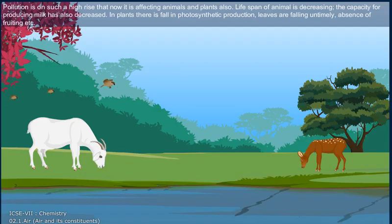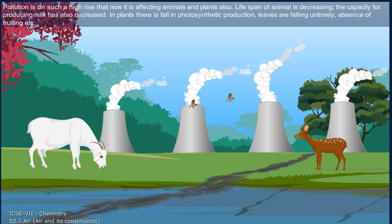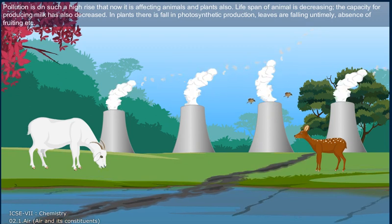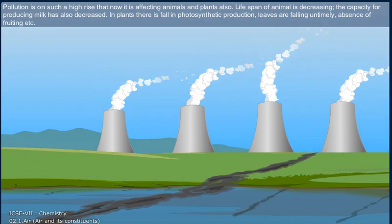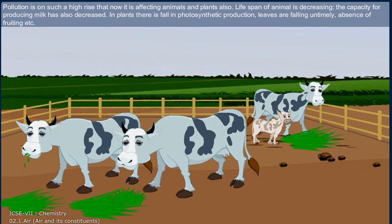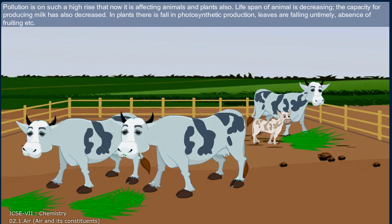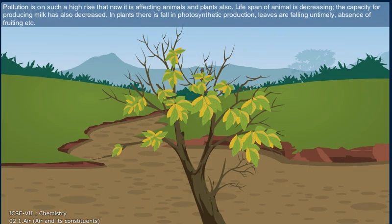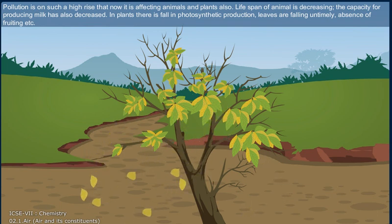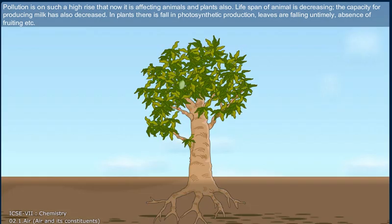Pollution is rising so high that it is now affecting animals and plants also. The lifespan of animals is decreasing and their capacity for producing milk has also decreased. In plants, there is a fall in photosynthetic production, leaves are falling untimely, and there is an absence of fruiting.